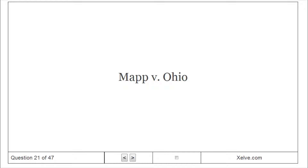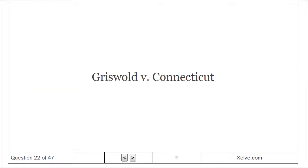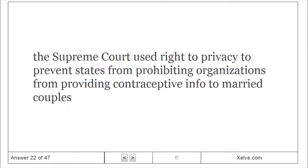Mapp v. Ohio: Illegally obtained evidence may not be used as evidence in court. Griswold v. Connecticut: The Supreme Court used the right to privacy to prevent states from prohibiting organizations from providing contraceptive information to married couples.